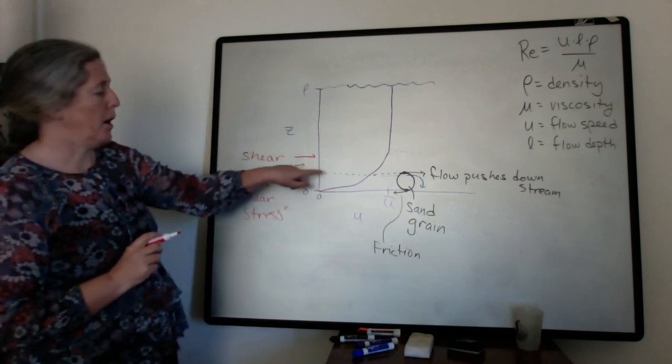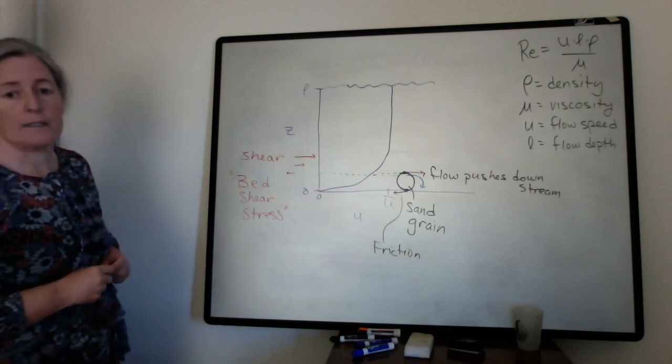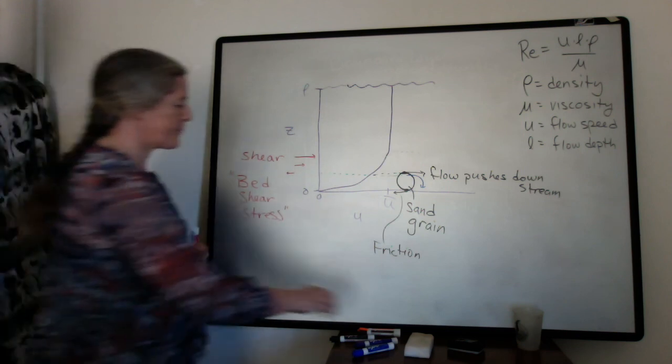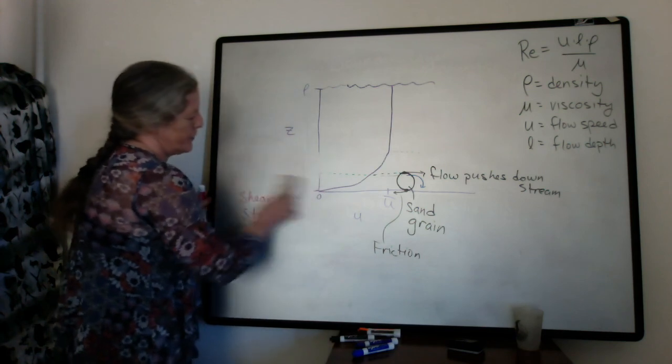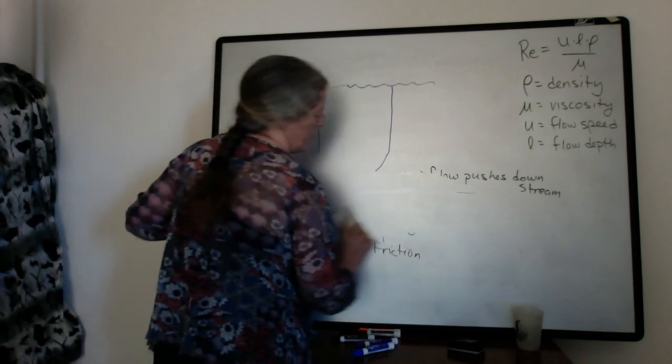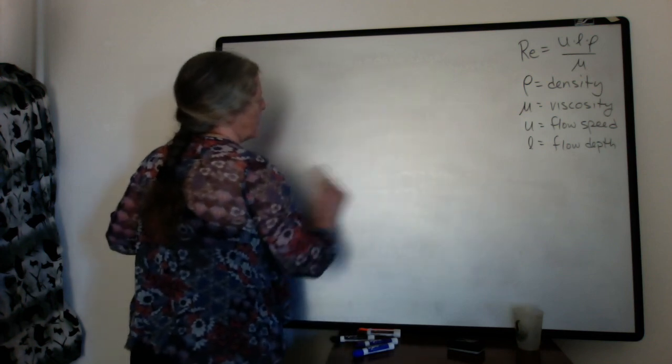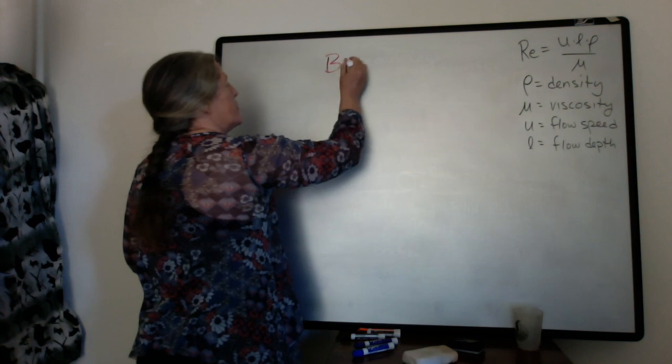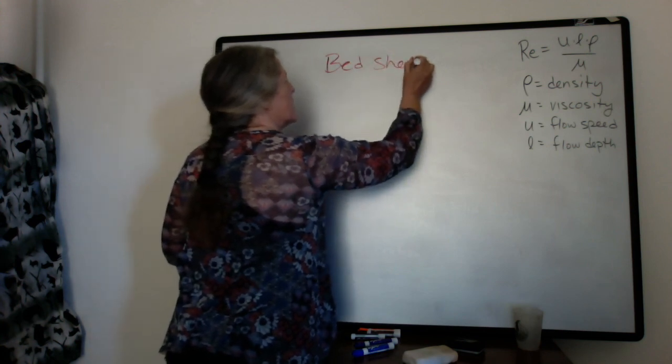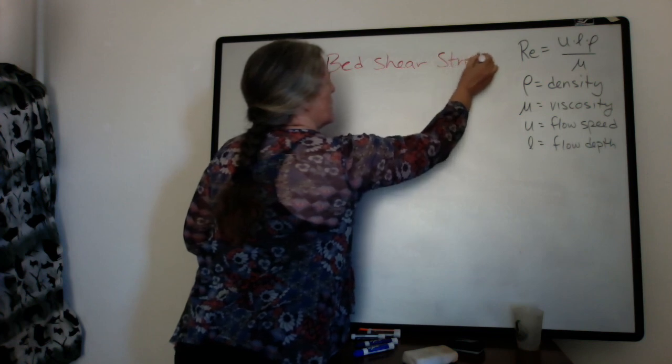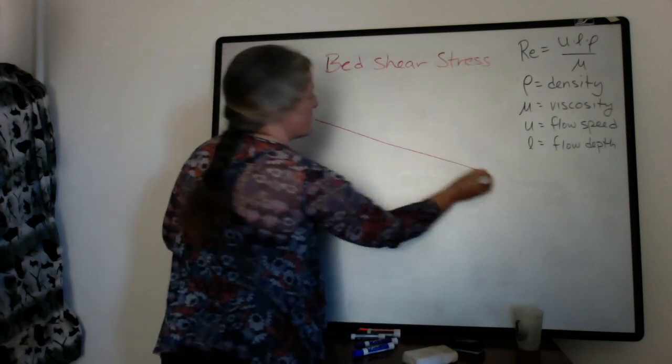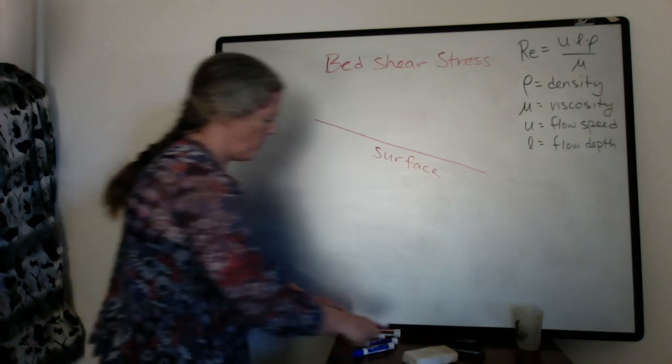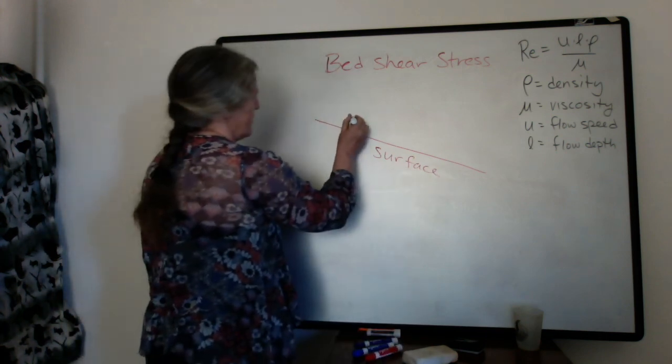So the bed shear stress that's strongly influenced by that variation in velocity and forces on the grain that are related to the flow. So the bed shear stress is related to more than just the boundary layer because you have to look at all the forces on the grain. So we can look at the bed shear stress more broadly. So I'm going to draw a sloping surface this time. And we can look at all of the forces on the grain. So here's my grain here.